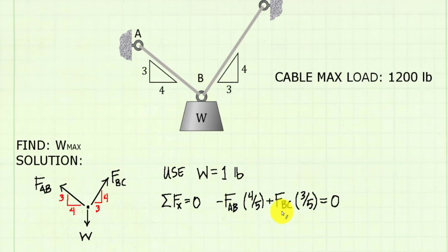Then, in the positive direction, going to the right, the component of force BC times the horizontal component, which is going to be of the similar triangle, which is going to be 3 over the hypotenuse, 5. Set it equal to 0.